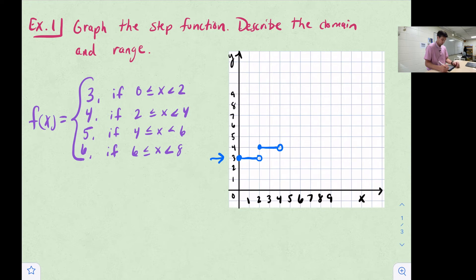The next one is y is equal to five when x is between four, with a closed circle, and six, with an open circle. Now we can draw our line to connect those.